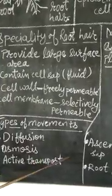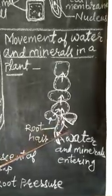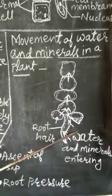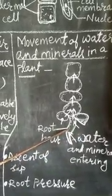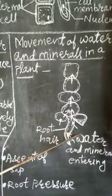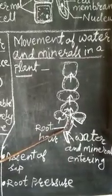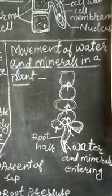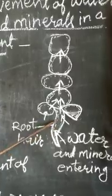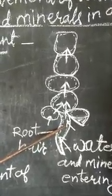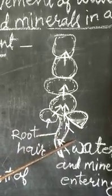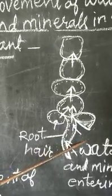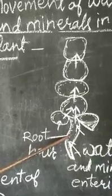Then last one, active transport. As we can see that the water molecules is higher in the soil and lower inside the root cell, so here movement of water molecules is from higher concentration to lower concentration, so it does not require any type of energy. But at the same time, because of the presence of cell sap, the minerals present inside the root cell is higher in concentration as compared to soil. So here there will be movement of minerals from lower to higher concentration. So it needs energy and this movement is called active transport.